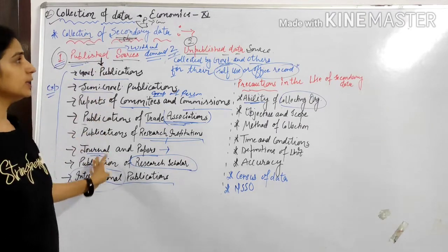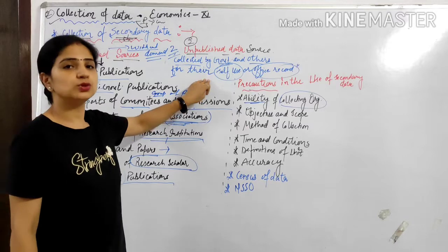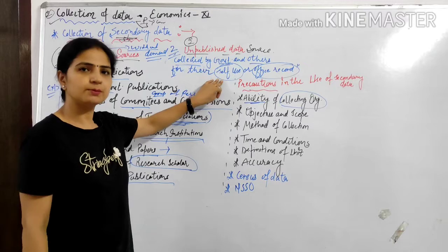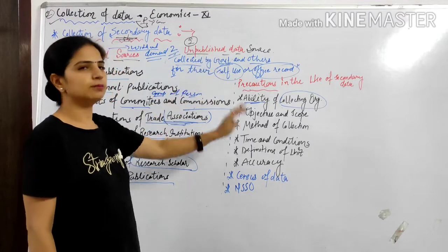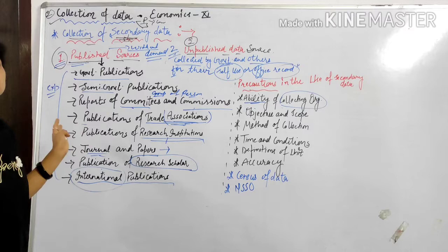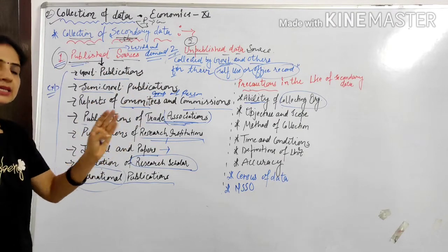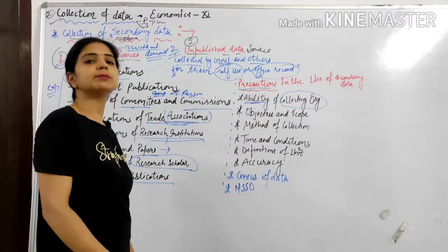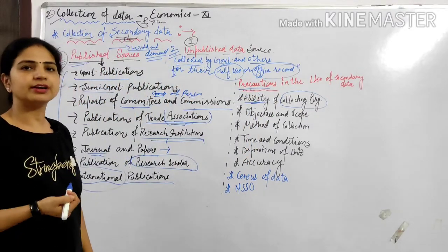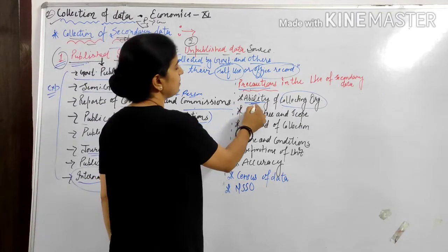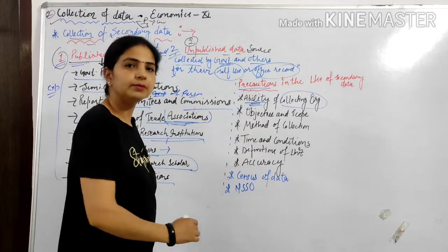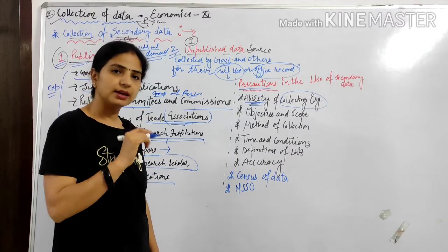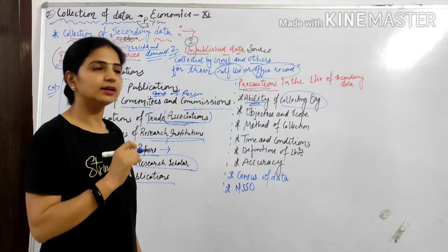So we have covered published source and unpublished source. Information we collect for our own record and self-use, which we don't give to anyone without demand, is the unpublished source. Now, when using this secondary data which is already collected by someone else, there are some precautions to keep in mind.